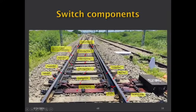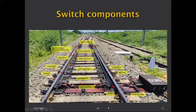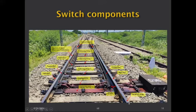Switch components: showing the full view of points and crossing, particularly the switch portion. The first joint is the stock rail joint — the straight track connects with the points and crossing here. Nowadays, to ensure good running, this rail is also often welded, though the stock rail may eventually need renewal along with the tongue rail, which can be a problem if welded.